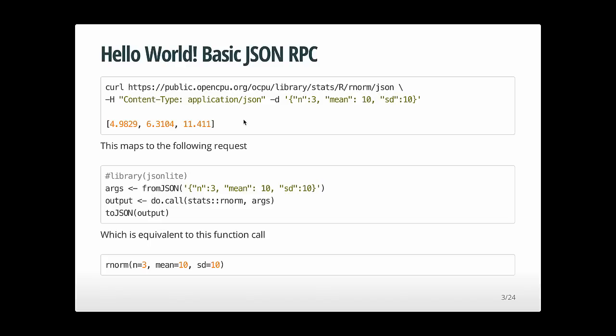This URL is the root API. The library is the main library with R packages — slash stats for the stats R package. Slash R is the R namespace within the package. Slash rnorm is the function. And with slash JSON, we ask for the output in JSON. Then we post a JSON payload which contains the function call arguments — in this case, n, the mean, and the standard deviation.